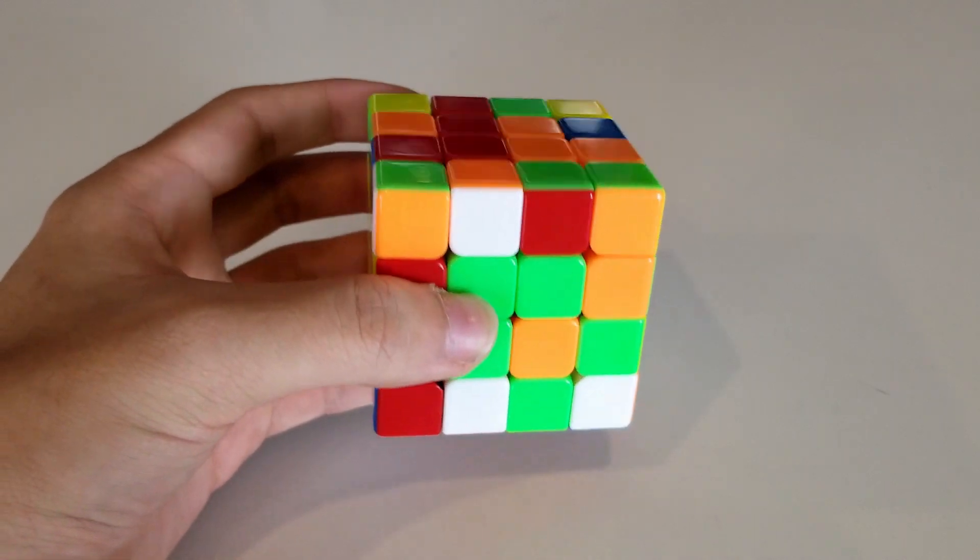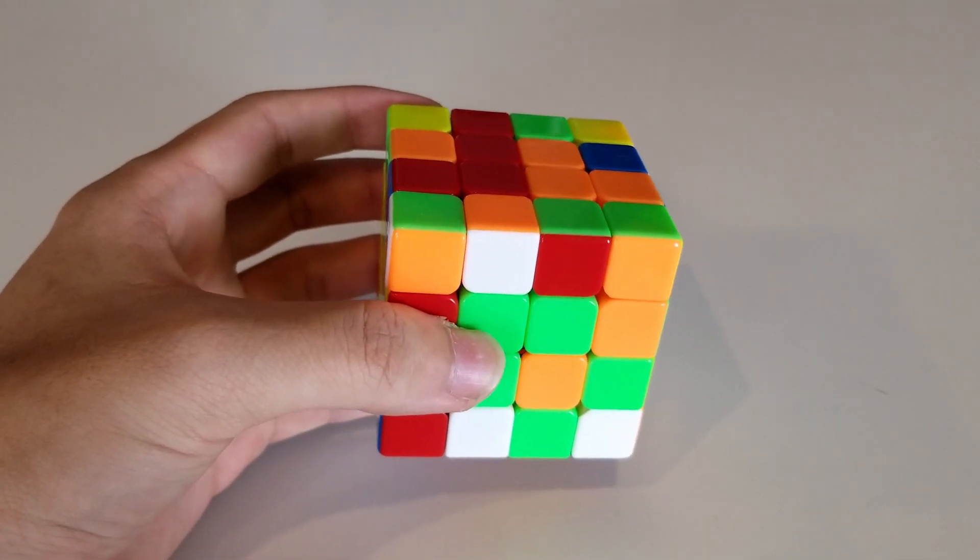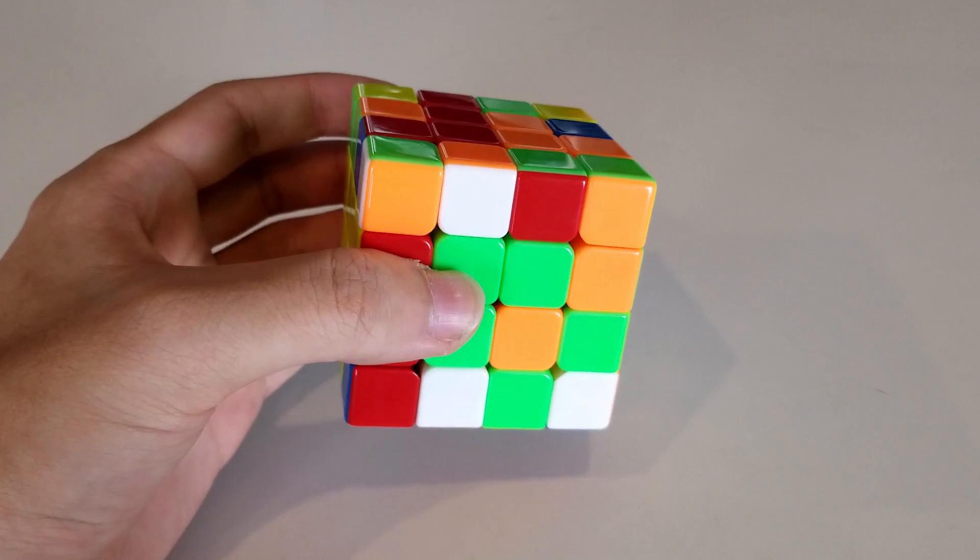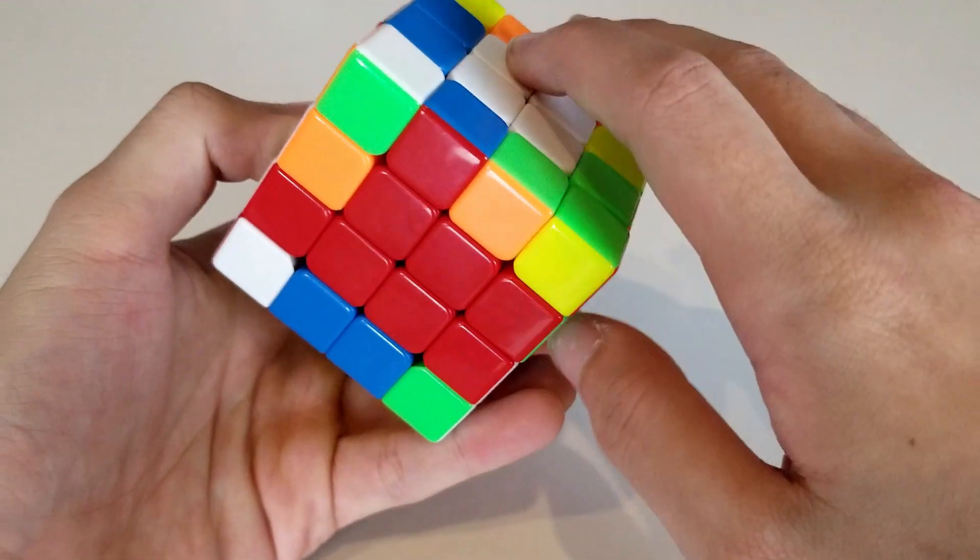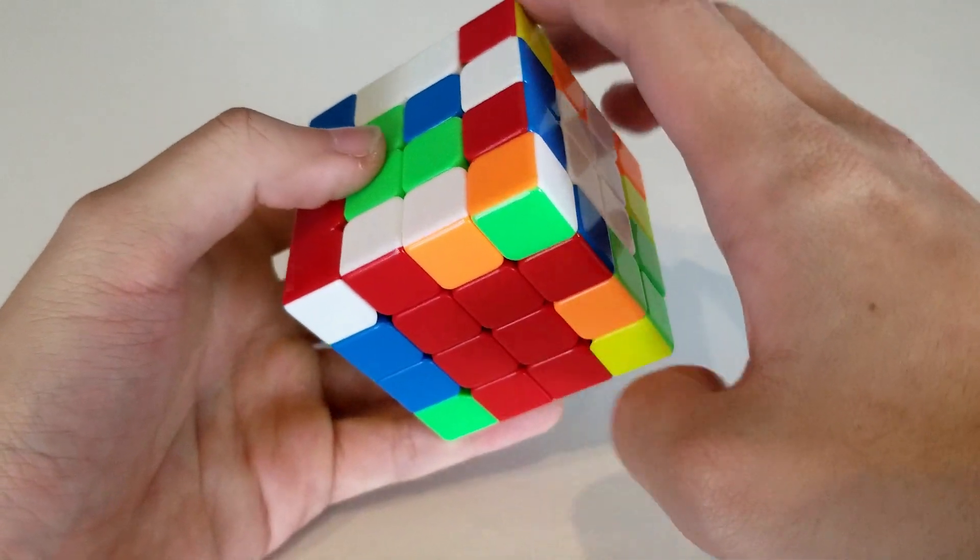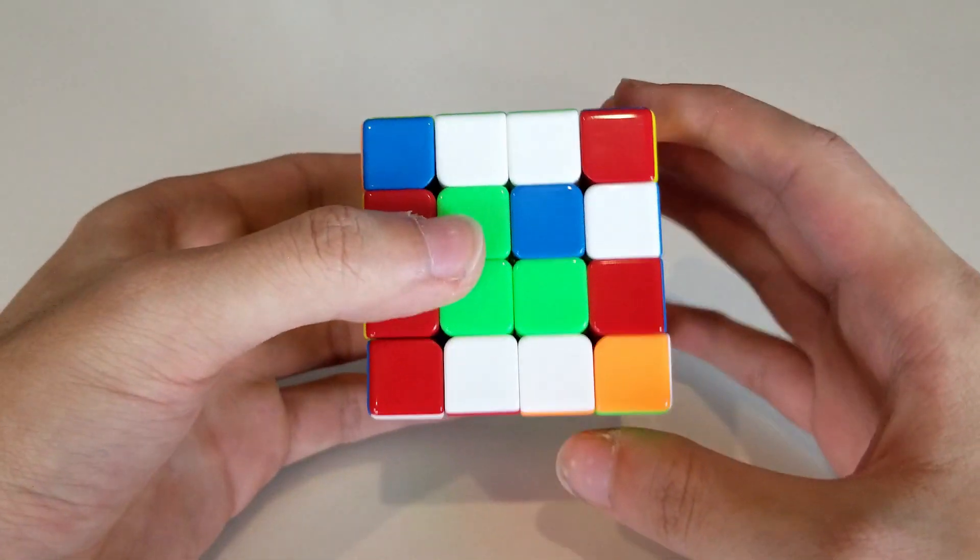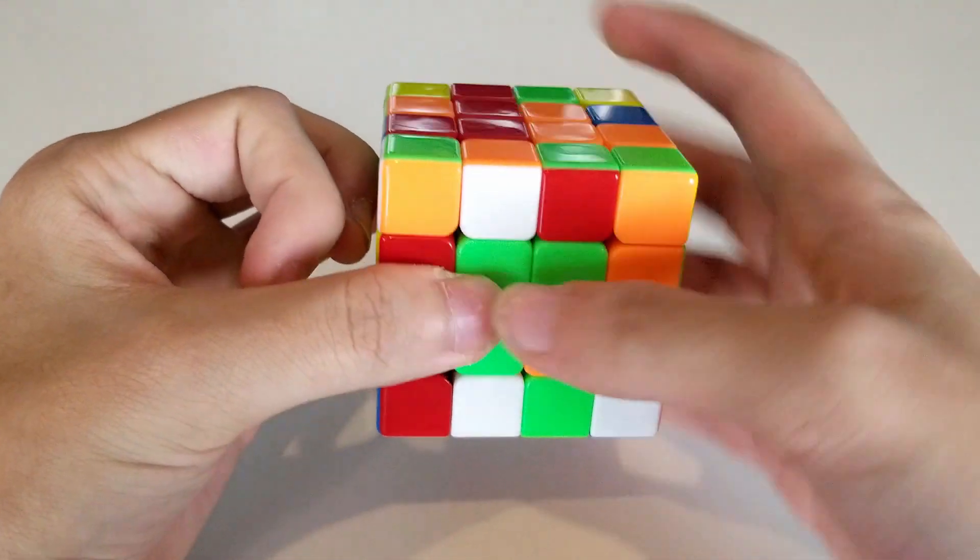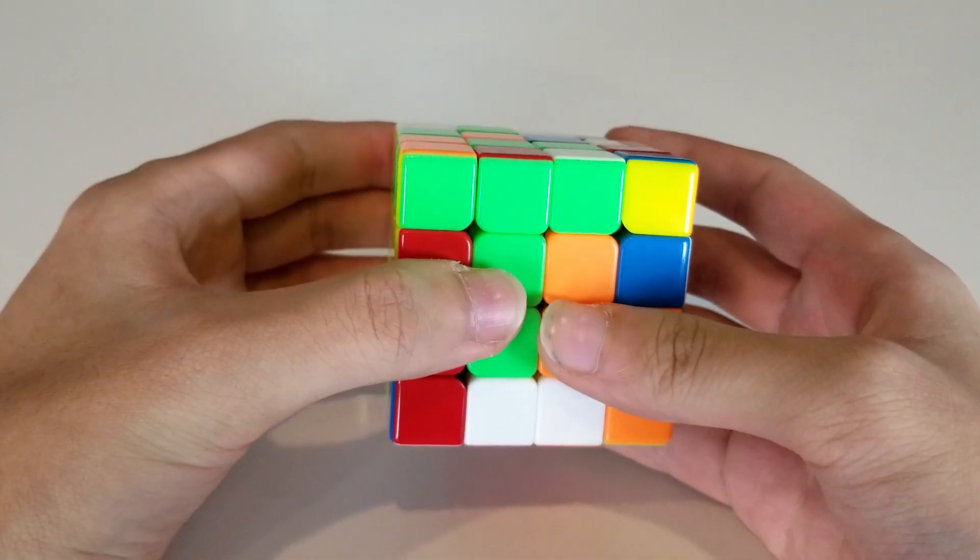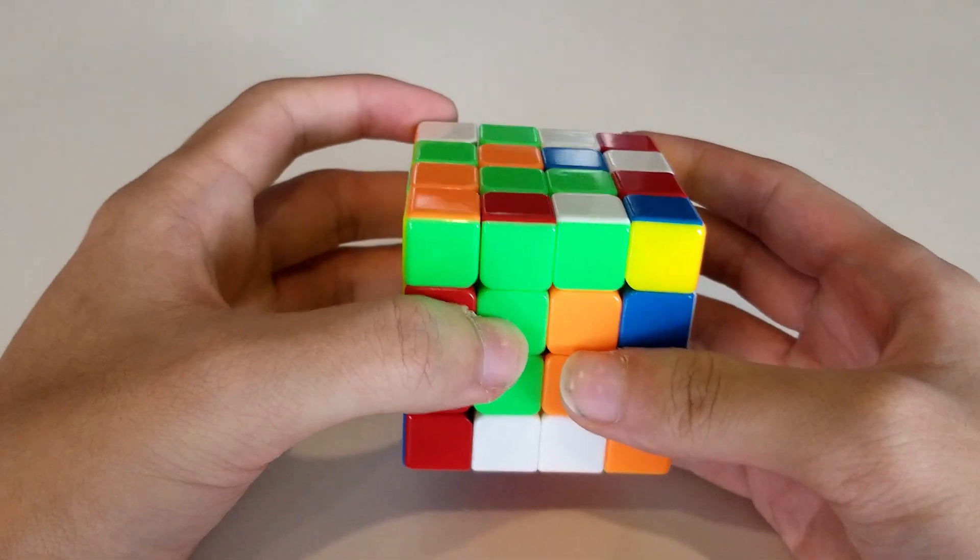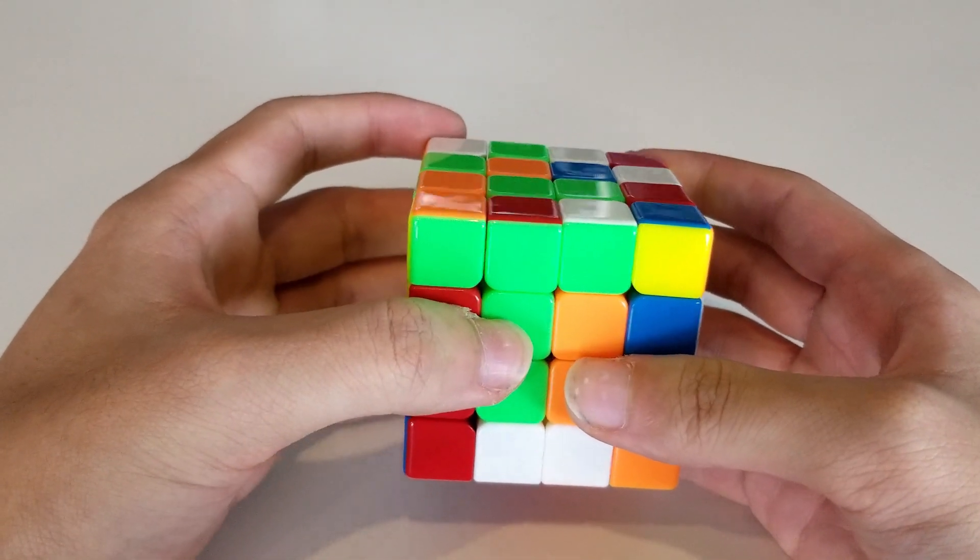So in solving our third center, we want to take care to make the parity even once you've solved it. Since it's odd right now, if we do this half turn, our parity will be odd, and it will be guaranteed OLL parity on the solve. But if I go back here, do one quarter turn to flip the parity and put it in, now we're guaranteed not to have OLL parity on this solve. So if we finish up the solve, you can see that we have no OLL parity.